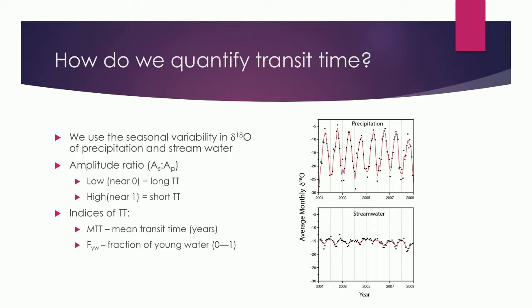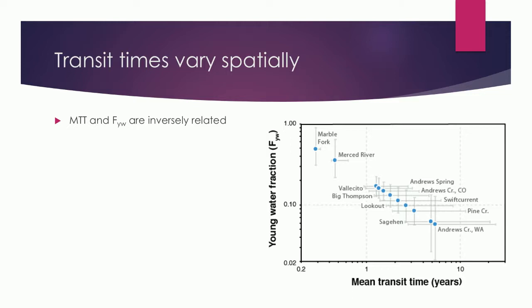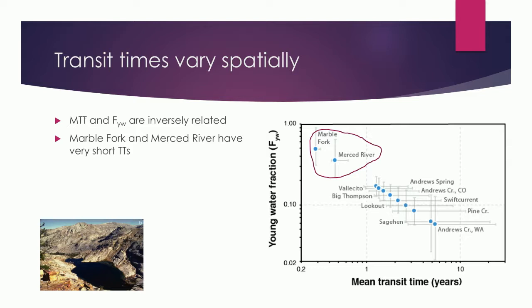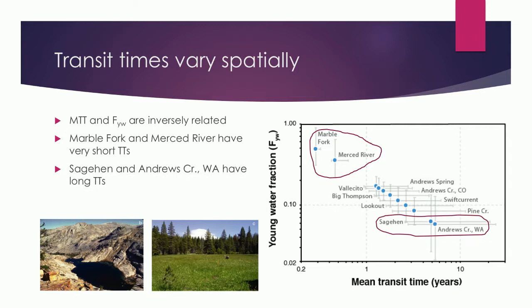This graph shows mean transit time on the x-axis and young water fraction on the y-axis — the two metrics are inversely related. Mean transit times for our catchments ranged from about 90 days up to about six or seven years, but with a lot of uncertainty. The Marble Fork and Merced River have very short transit times — lots of bare rock and not much vegetation or soil. Sagehen Creek and Andrews Creek in Washington have relatively long transit times, exemplified by the meadow and forest landscape.